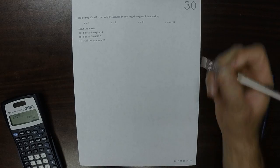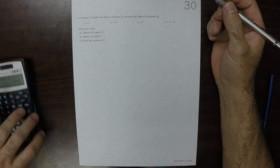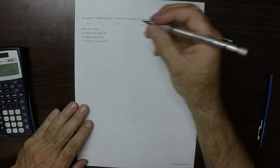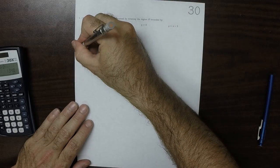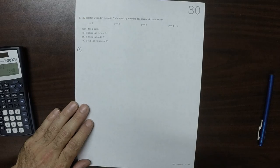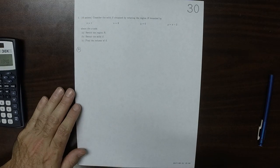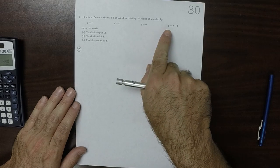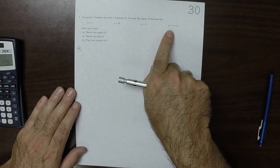This is the solution to written homework 30. So then, in part a, x is 1, x is 8, y is 0, and y is this line.